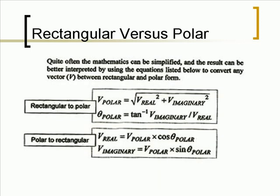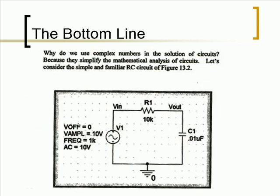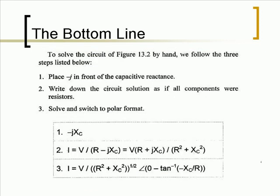Quite often, the mathematics can be simplified and the result can be better interpreted by using the equations listed below to convert any vector between rectangular and polar form. To solve circuits using complex numbers, we follow three steps. Step 1: Place negative j in front of the capacitive reactance. Step 2: Write down the circuit solution as if all components were resistors. Step 3: Solve and switch to polar format.